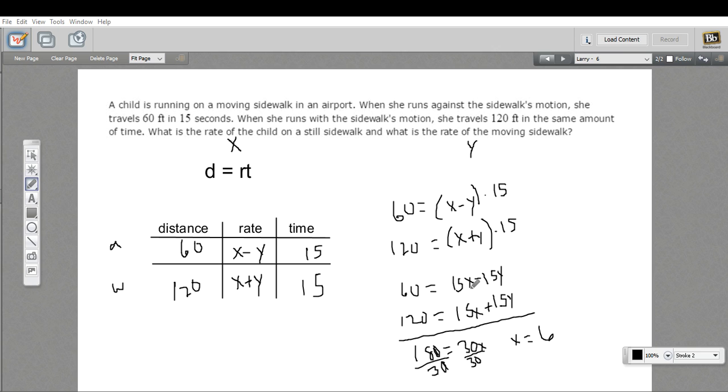So that's 90. So 60, I'm just using this equation right here, equals 90 minus 15y. Now we subtract 90 from both sides. We get negative 30 over here. And negative 15y over here, we divide by negative 15, we get y equals 2.